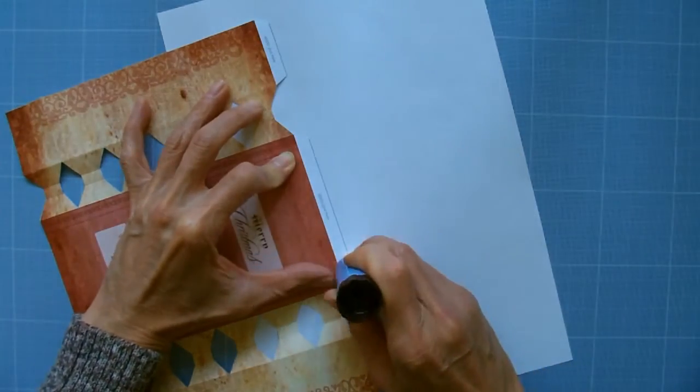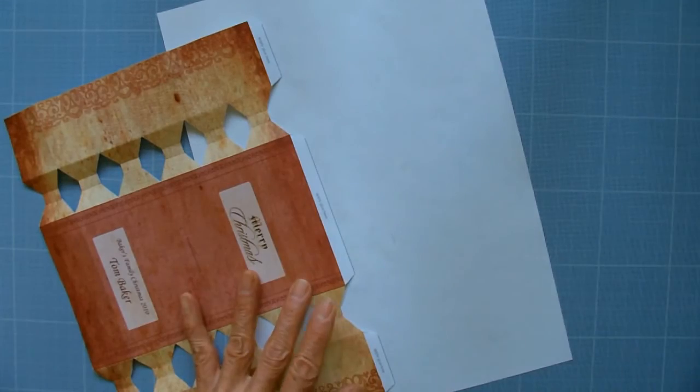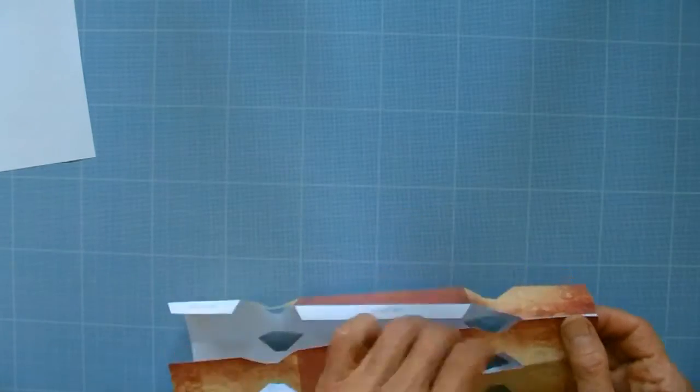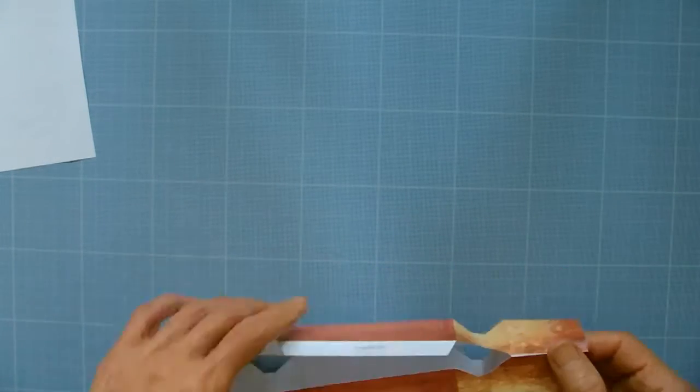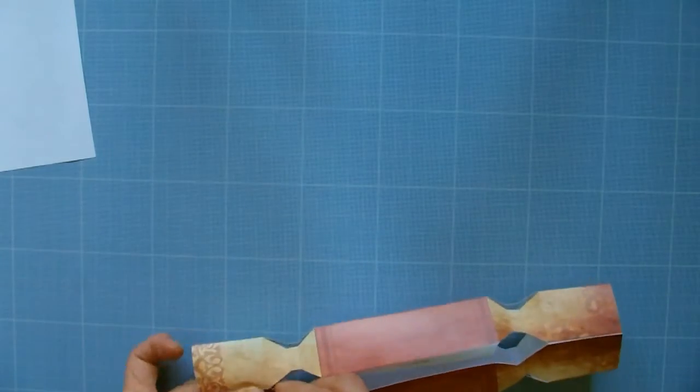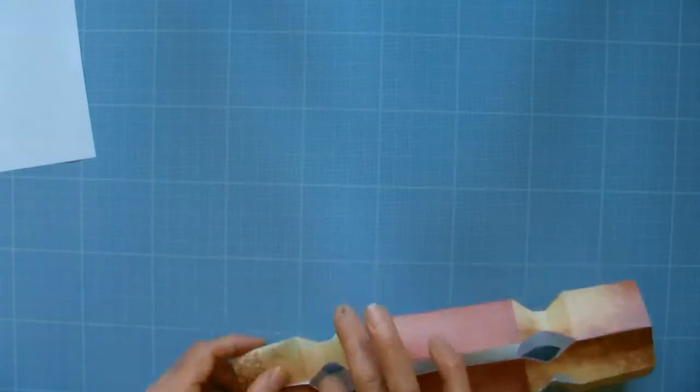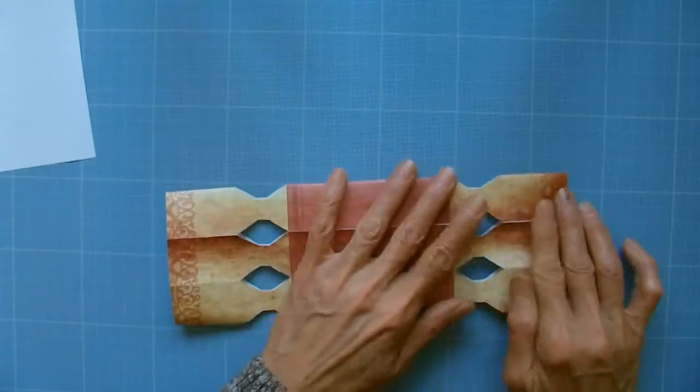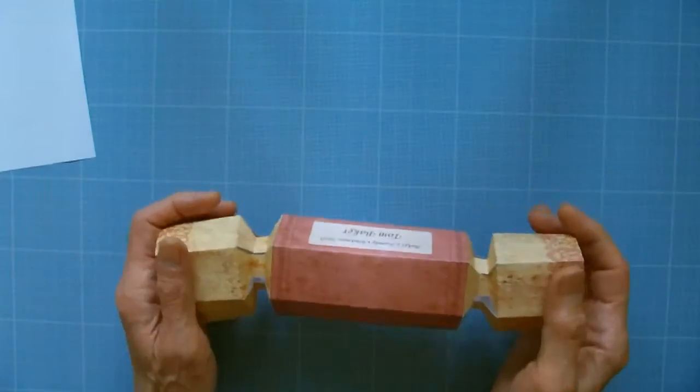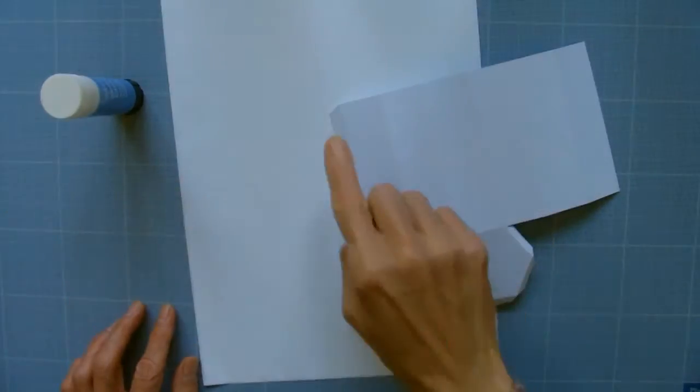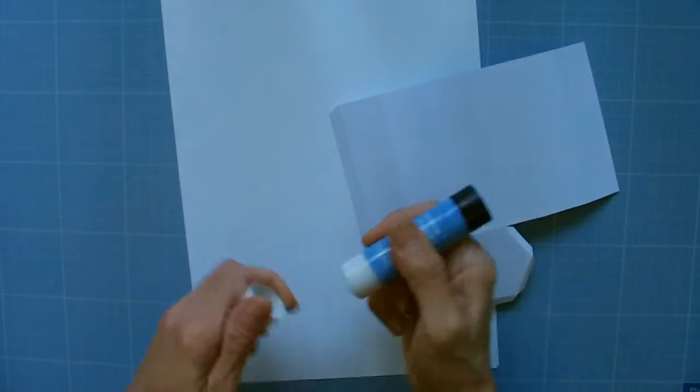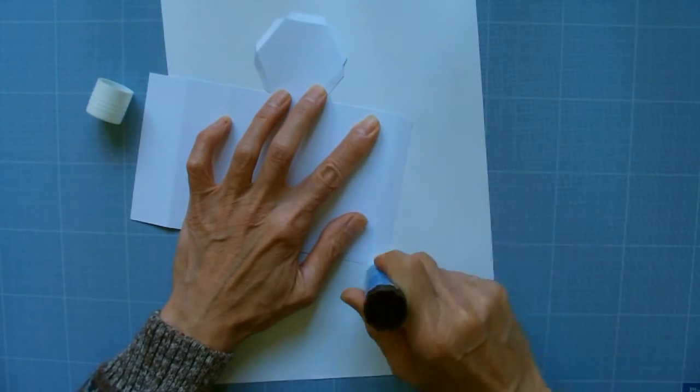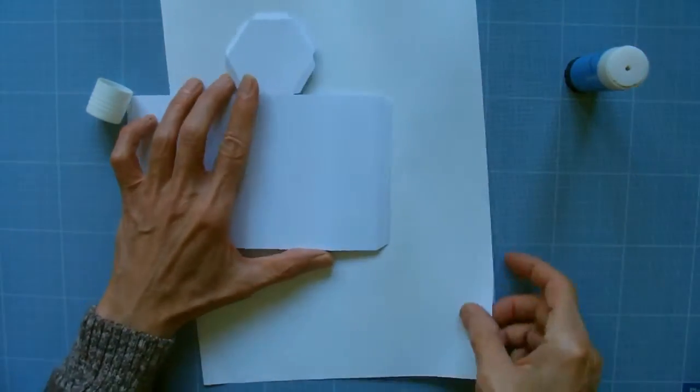Apply glue on the white tabs and stick the opposite edge on it. Apply glue on the tab of the inner tube and stick the opposite edge on it.